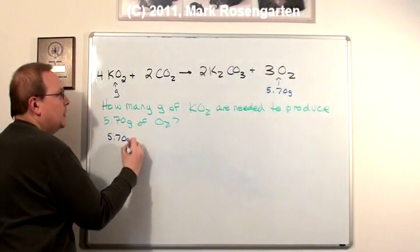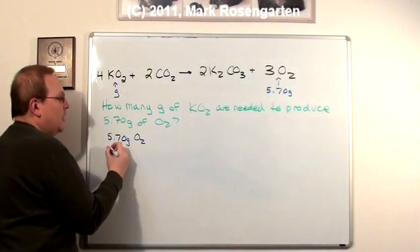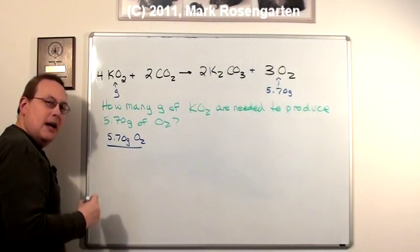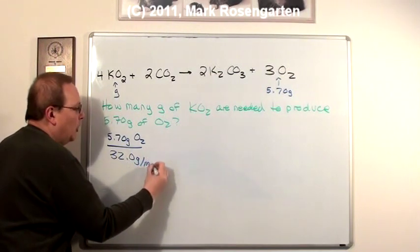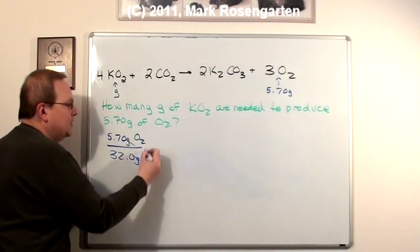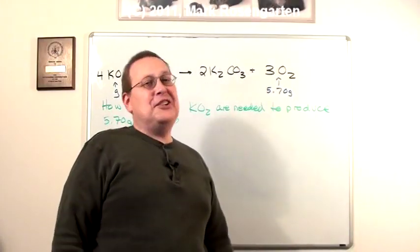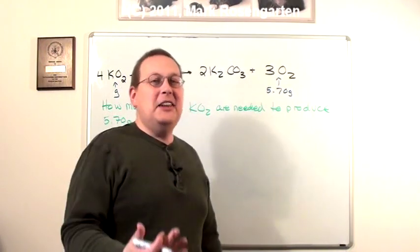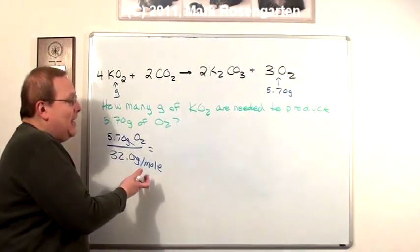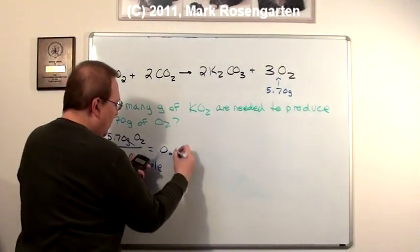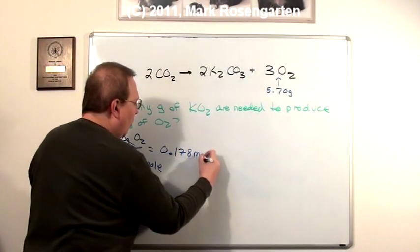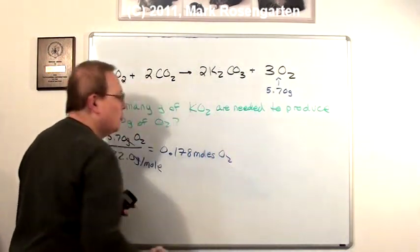First thing we're going to do is convert the grams of oxygen into moles by dividing by O2's gram formula mass, 32.0 grams per mole. Say goodbye to grams. And that comes out to, to three sig figs, 0.178 moles of O2. Great.